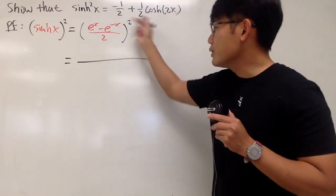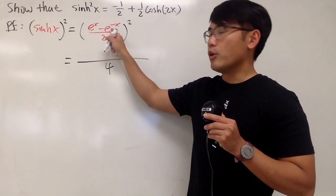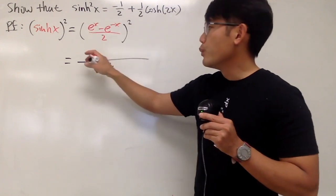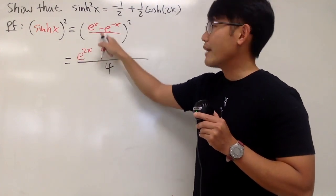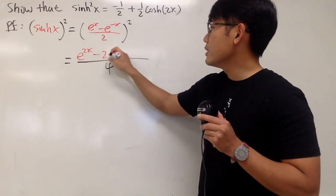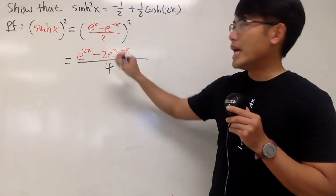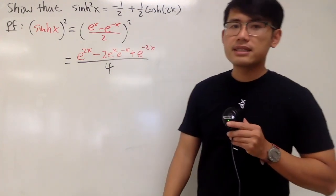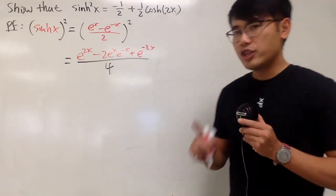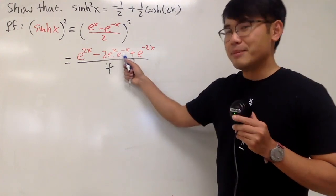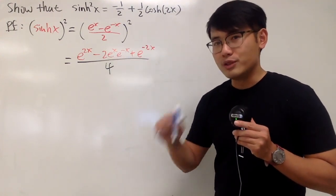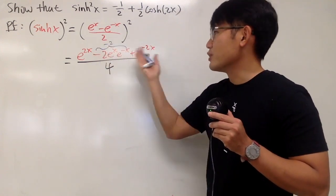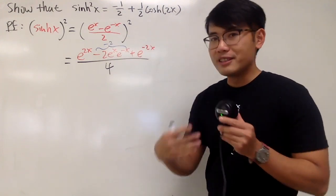In the denominator we have 2 squared, which is 4. On the top we have a binomial, so we have to square it. e to the x squared gives e to the 2x. Then minus 2 times e to the x times e to the negative x, and lastly we add e to the negative 2x. We know that e to the x times e to the negative x is e to the 0, which is 1, so that middle term is just minus 2.